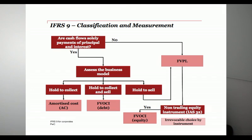In making that distinction, an entity has to look at two different kinds of tests. The first is a business model test — why is the entity holding the financial asset? We talked a bit about that in our last video, where we particularly looked at a company that factored trade receivables or other debts, and how that might impact the business model test.